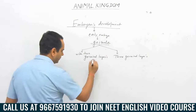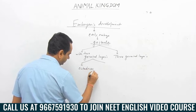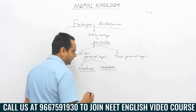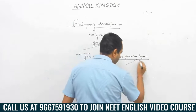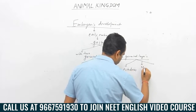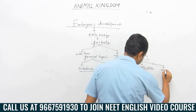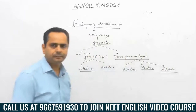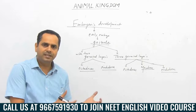If we talk about two germinal layers, those are ectoderm and endoderm. And if we talk about animals with three germinal layers, those germinal layers are ectoderm, mesoderm, and endoderm. We know that our body organs develop from these germinal layers only.